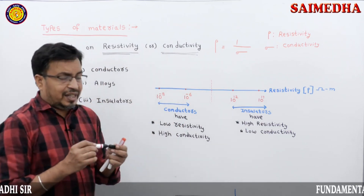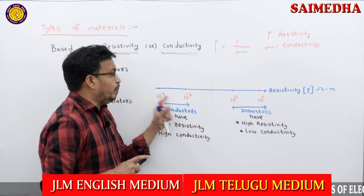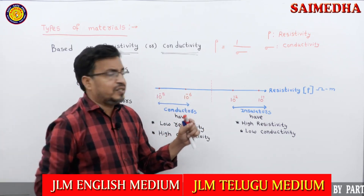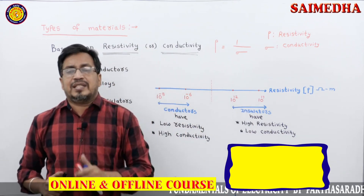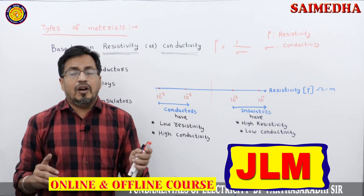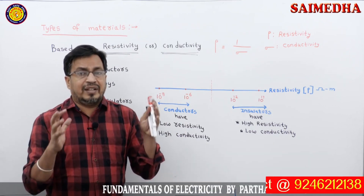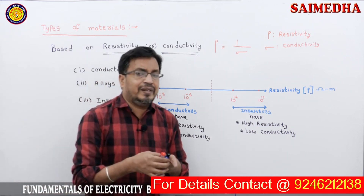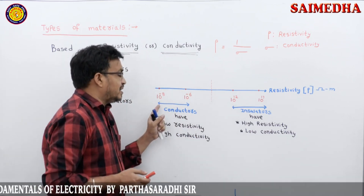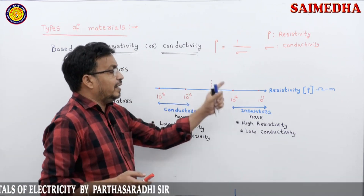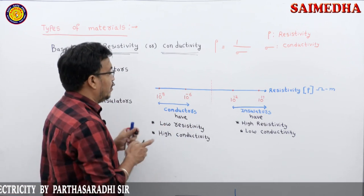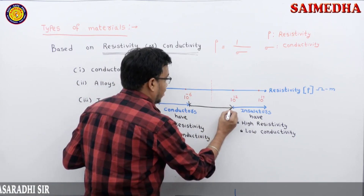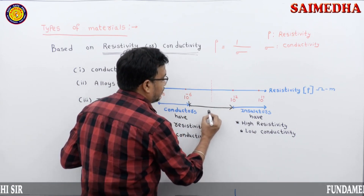The range of resistivity in conductors is 10 power minus 8 ohm-meter to 10 power minus 6 ohm-meter. The range in insulators is 10 power 12 to 10 power 17 ohm-meter. The range of resistivity in alloys lies between conductors and insulators: 10 power minus 6 to 10 power 12 ohm-meter.